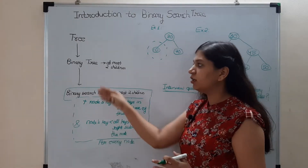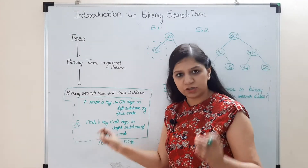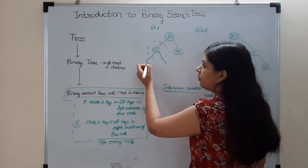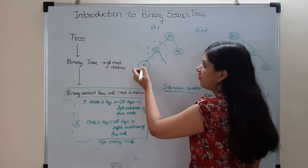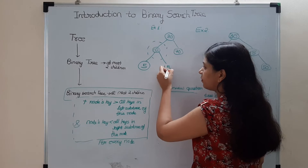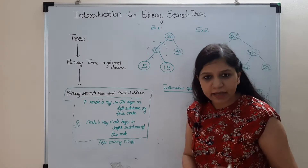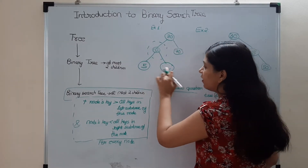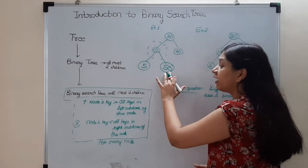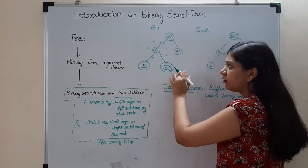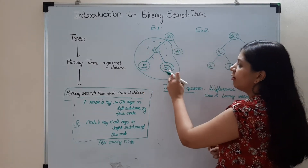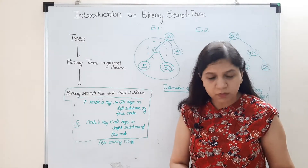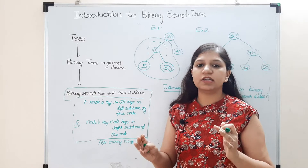This additional condition — binary tree plus this ordering condition — makes a binary search tree. And this condition holds for every node. For node 10, if it had two children, the left child should be less than 10 (say 5) and the right child should be greater than 10 (say 15). You cannot place 50 in the left subtree of 30, because even though 50 is greater than 10, it violates the condition for 30.